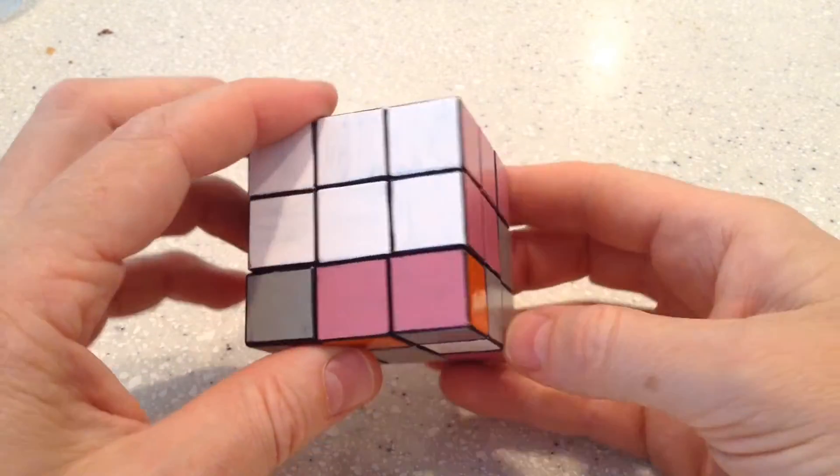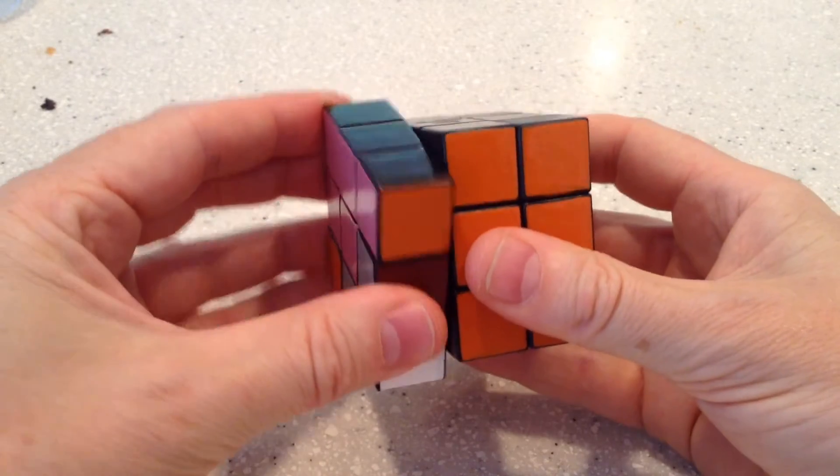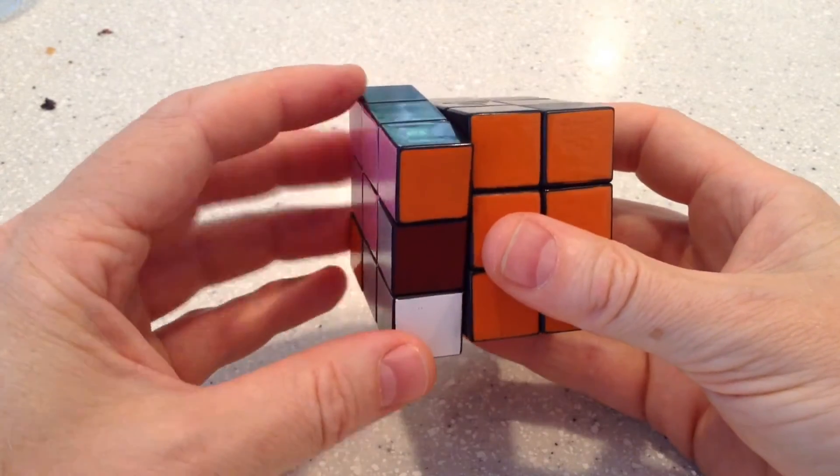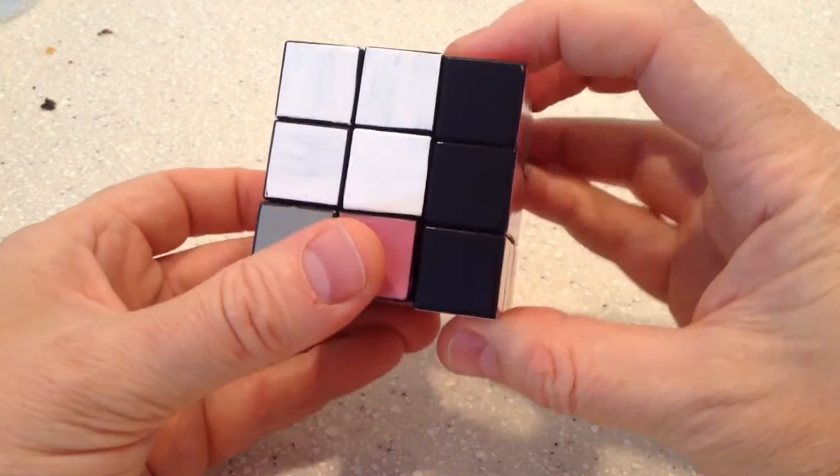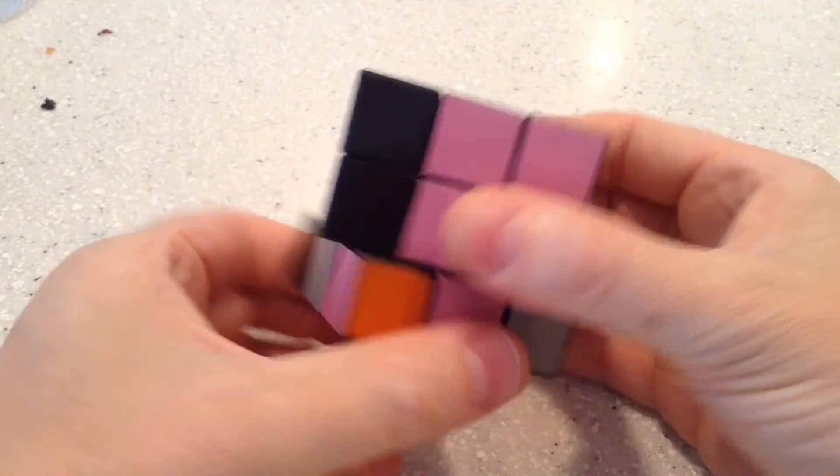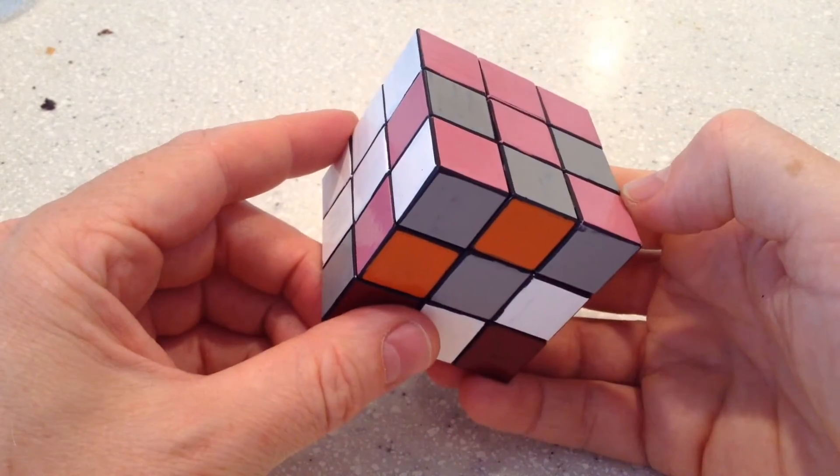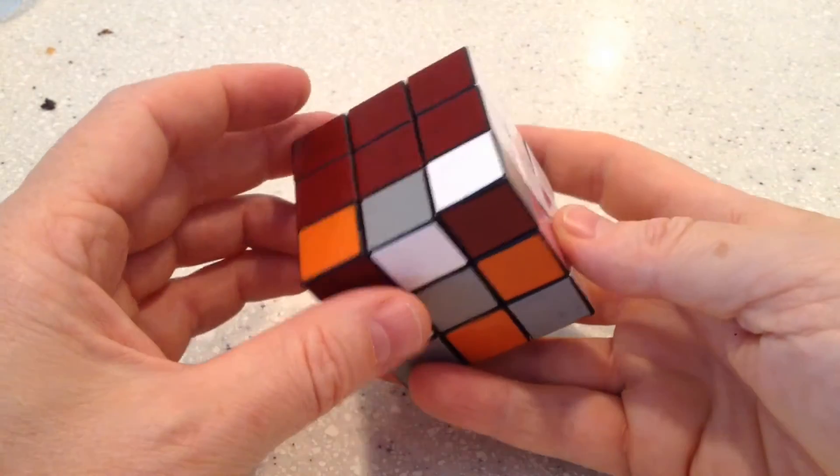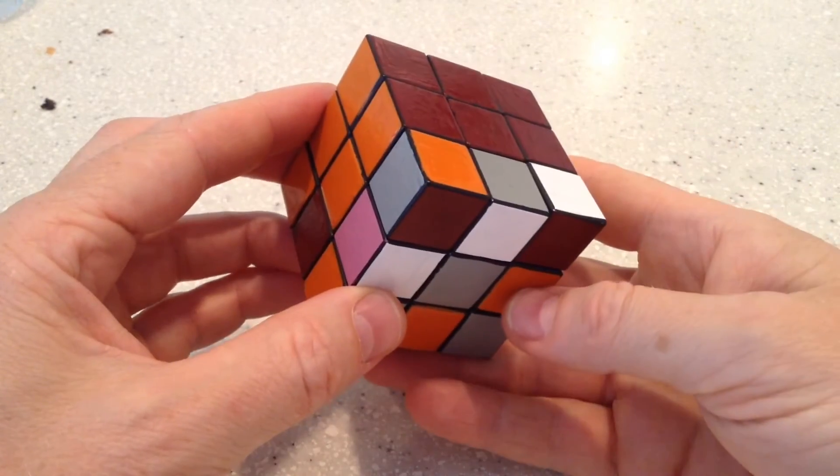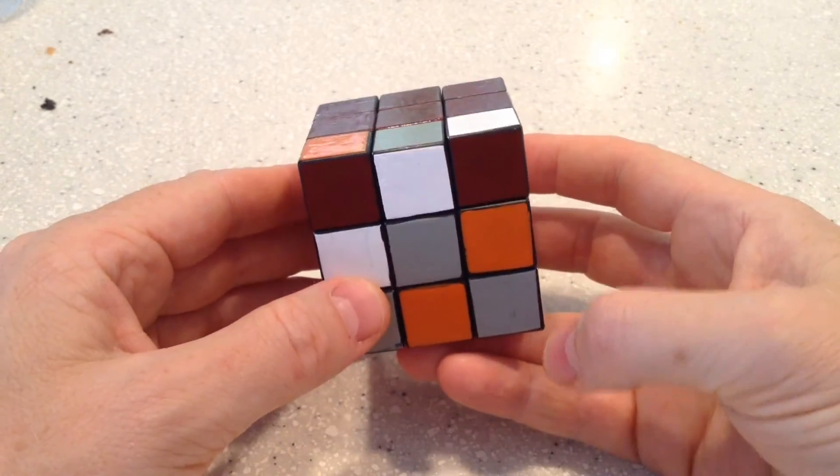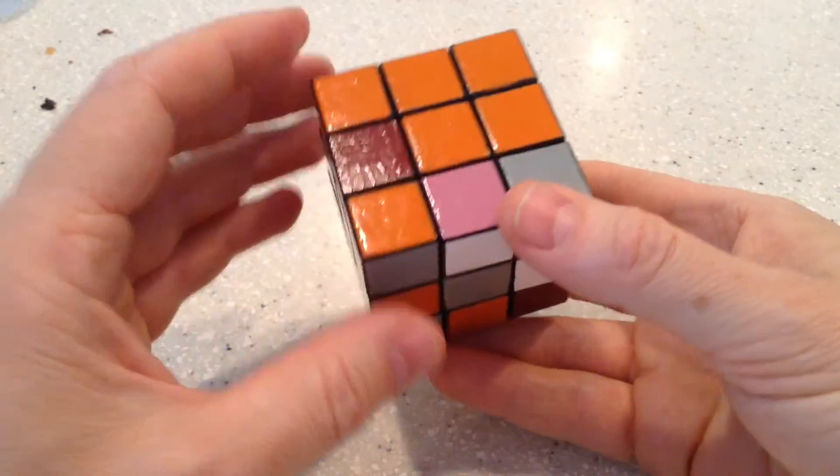And then, interestingly, if we perform the move - so we performed it on this, starting on this layer here - if we do it in the opposite direction, it puts those corner pieces back again, while leaving the purple ones in place. They have been rotated, but that's fine.